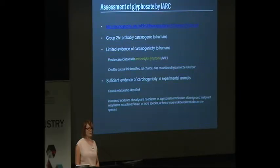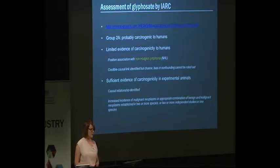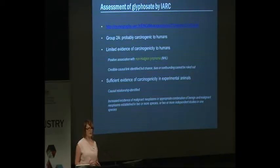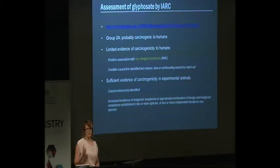Their criteria for sufficient evidence in experimental animals requires that a causal relationship be identified with increased incidence of malignant neoplasms, or an appropriate combination of benign and malignant neoplasms, established in either two or more species or in two or more independent studies in one species. This is where the strength of evidence approach comes in: if you have 100 studies and 98 say there's no association, but two in one species say there is, in a strength of evidence assessment you would say there is sufficient evidence because we've got these two studies.